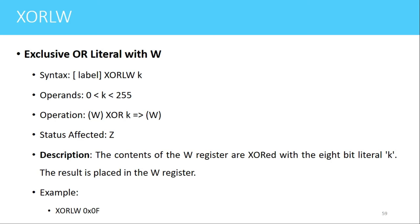The next instruction is XORLW. Using this instruction we can perform the Exclusive OR operation of the literal value and the working register. The syntax is XORLW K, where K is an 8-bit immediate value present in the instruction. The operation performed is the value in the working register XORed with K, and the result is stored in the working register. An example is XORLW 0x0F — the value in the working register will be XORed with 0x0F and the result stored in the working register.